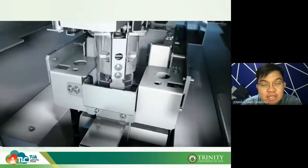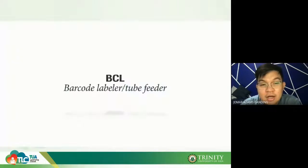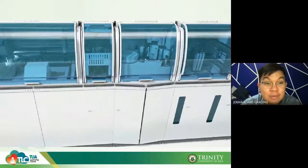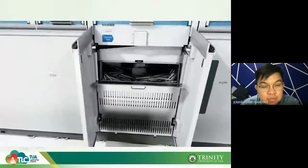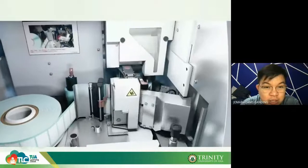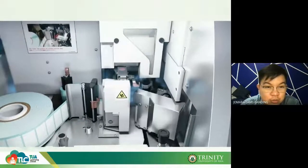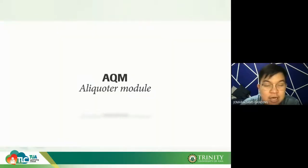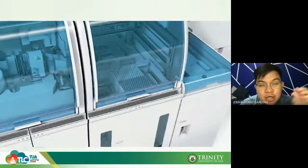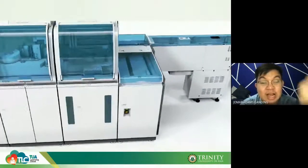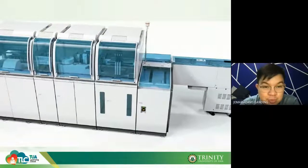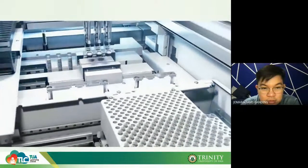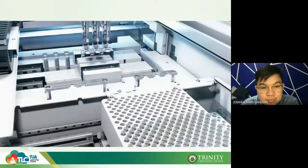While the stoppers are being removed, the tubes are not lost because of the tracking system. The machine then performs aliquoting — labeling the aliquot tubes and transferring the sample from the mother tube to the aliquot tubes automatically.